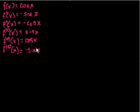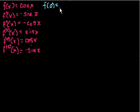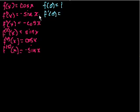We're going to do the Maclaurin representation, which is a specific example of the Taylor series, where we figure out the values of the derivatives at x is equal to 0. So f of 0 — what's cosine of 0? Cosine of 0 is 1. f prime of 0 is equal to minus sine of 0, but sine of 0 is 0, so minus 0 is still 0.